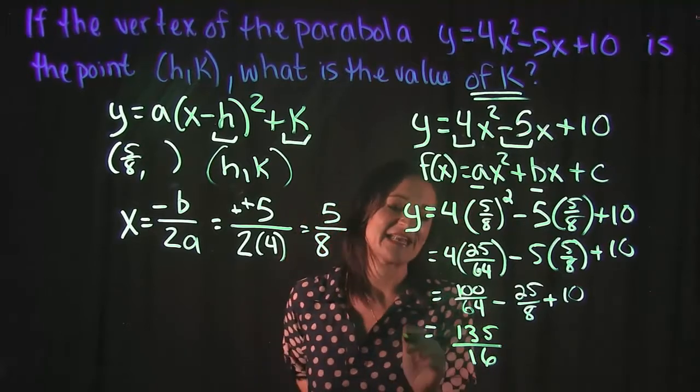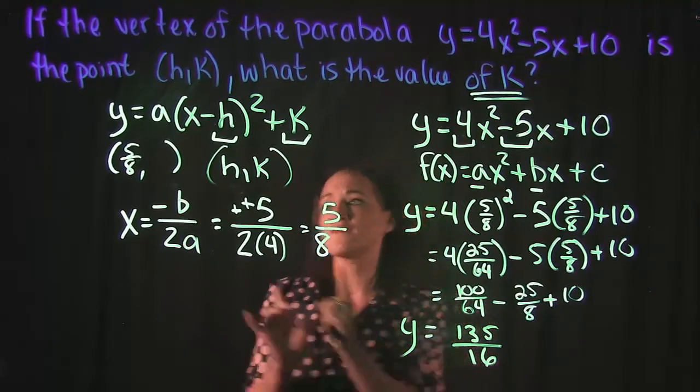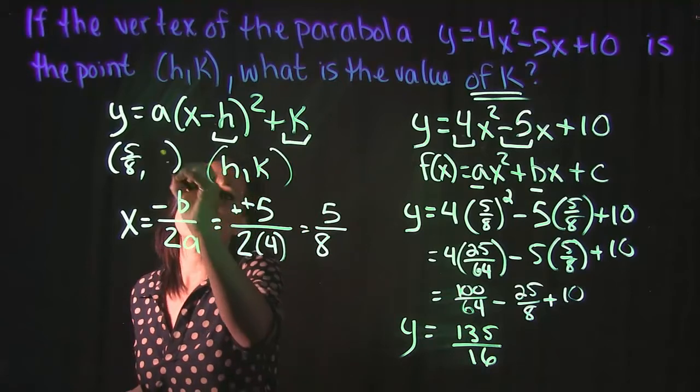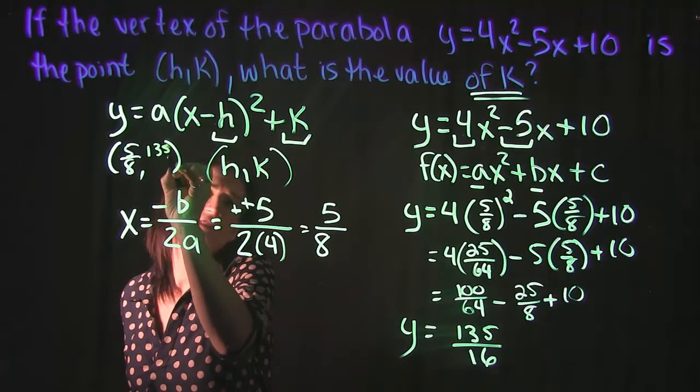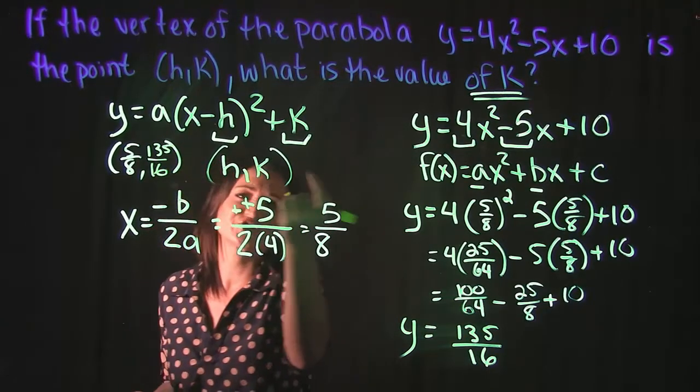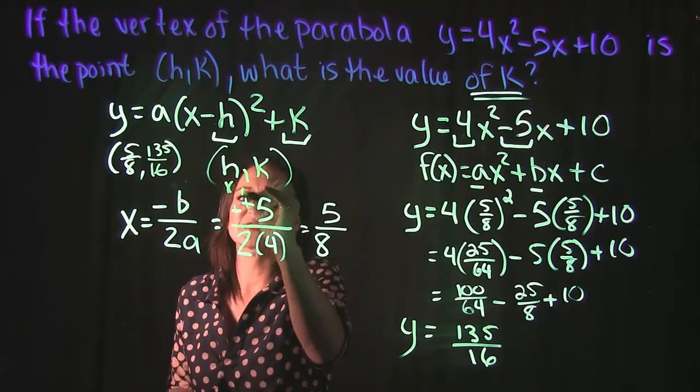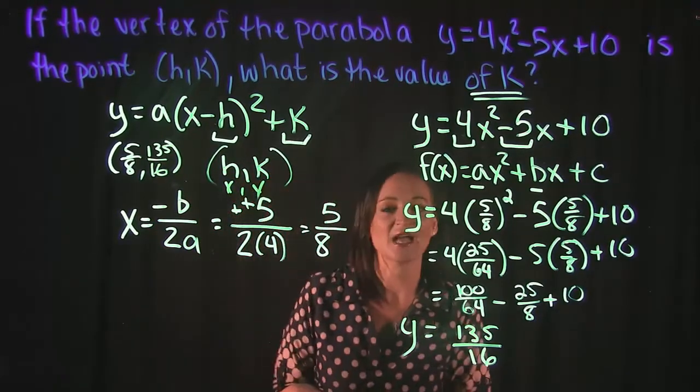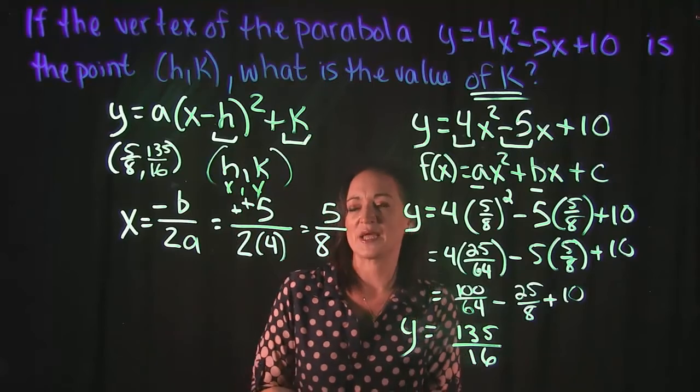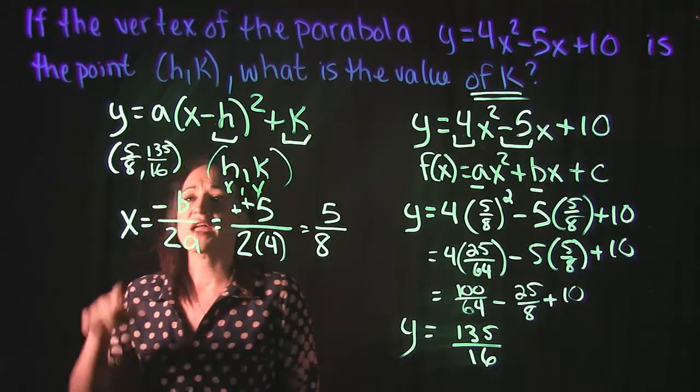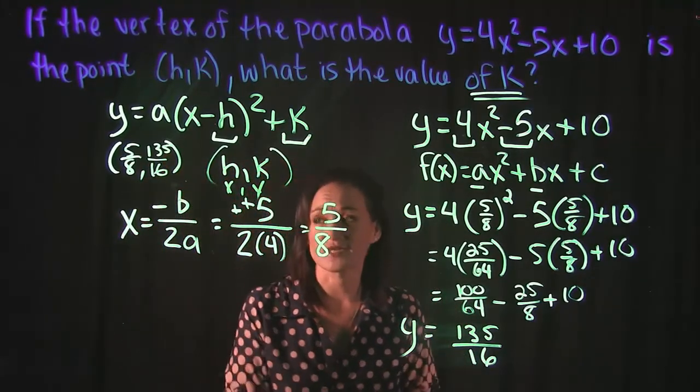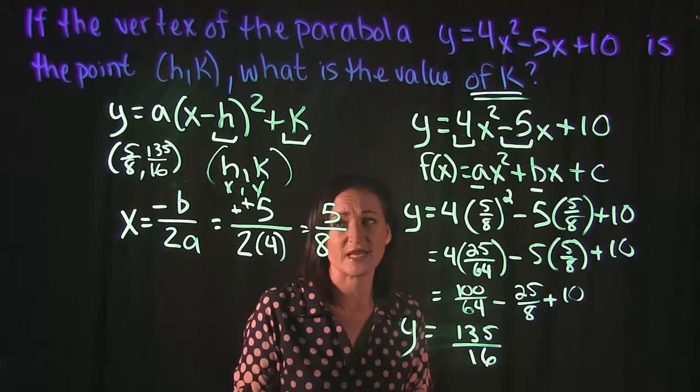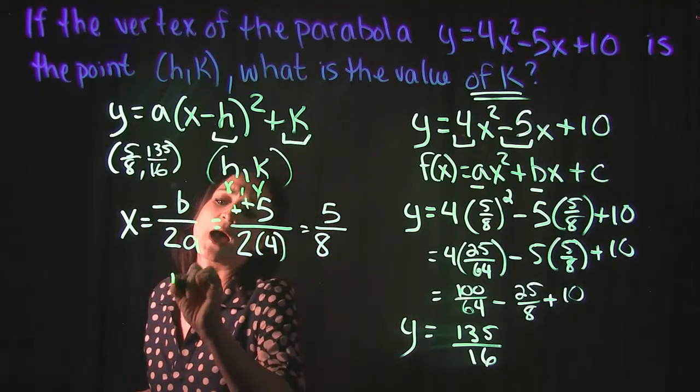This represents our y-value for that point. But because we're talking about the vertex here, this is really just the (h,k) — it's the same thing as an (x,y), just the x and y values for the vertex of your parabola. So 5/8 and 135/16 represents the vertex of this parabola.